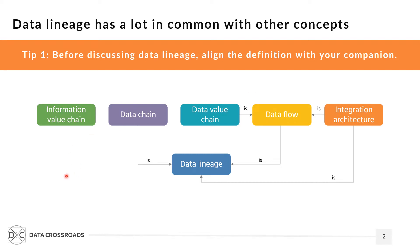The results of this analysis you can see on the slide. You will find the deep analysis of these definitions in part one of my book. The conclusion is challenging. Some of these concepts are considered as being synonymous to data lineage — these are data chain, data flow, and integration architecture — and these concepts are used interchangeably.